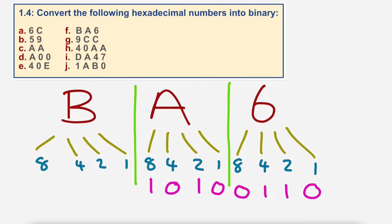And B would be 11, which means we've got 8 — no 4s, because 8 plus 4 is 12. 8 plus 2 is 10, plus 1 is 11. So our answer would be 1, 0, 1, 1; then 1, 0, 1, 0; then 0, 0, 1, 1, 0.